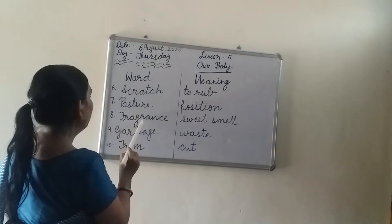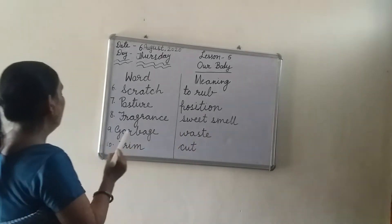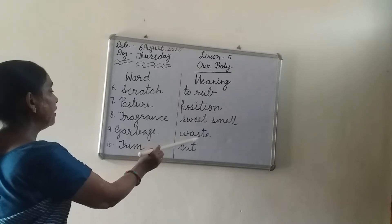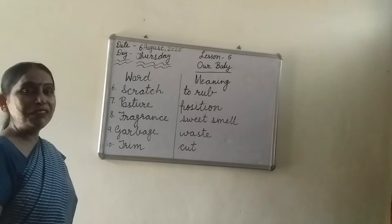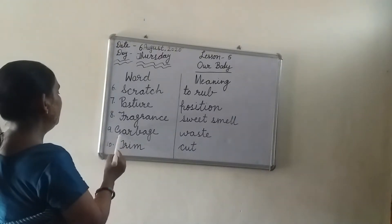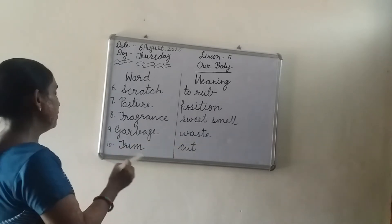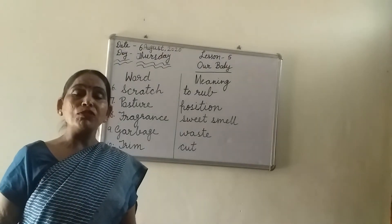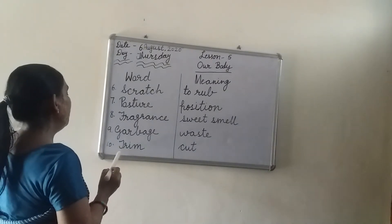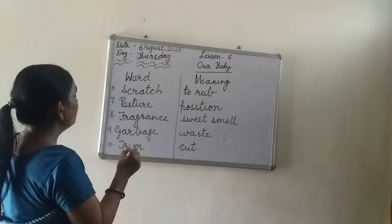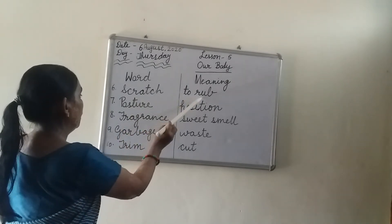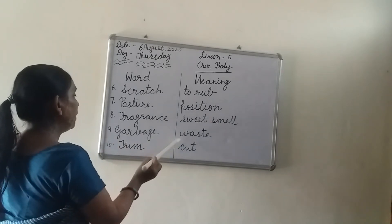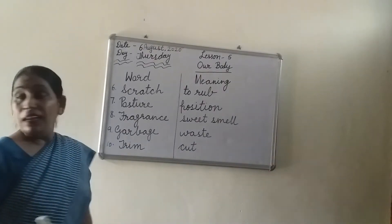Fragrance — F-R-A-G-R-A-N-C-E. Meaning: sweet smell. Ninth word is Garbage — G-A-R-B-A-G-E. Meaning: waste — W-A-S-T-E. जो waste material होता है, कूड़ा-करकट को हम Garbage बोलेंगे. Tenth word is Trim — T-R-I-M. Meaning: cut. जैसे हमारे nails बड़े हो जाते हैं, hair बड़े हो जाते हैं तो हम उसे cut करते हैं, उसे Trim करना बोलते हैं.